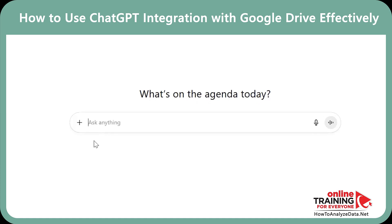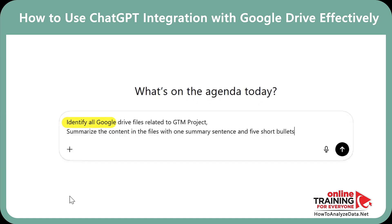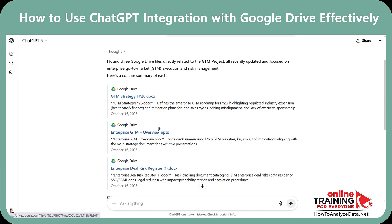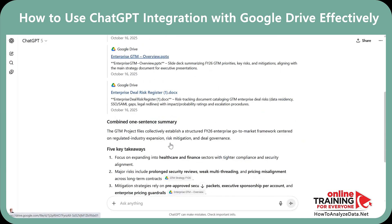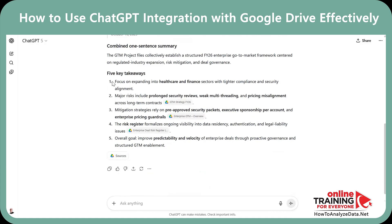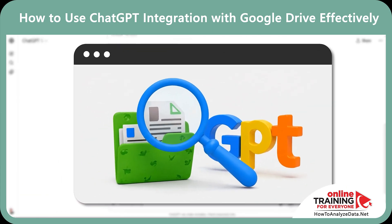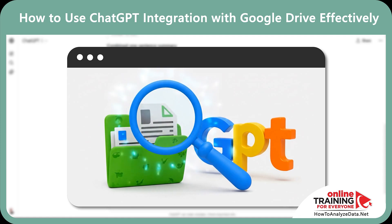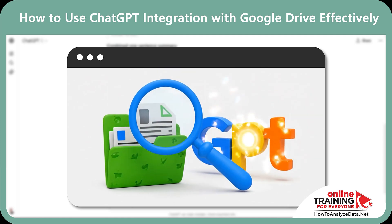Using this prompt: 'Identify all Google Drive files related to the GTM project. Summarize the content in the files with one summary sentence and five short bullets.' In just a few seconds, you get links to all available files, a combined one-sentence summary, and five key takeaways. With this type of assistance, you can jump from a fuzzy idea to the exact content in just a few seconds.